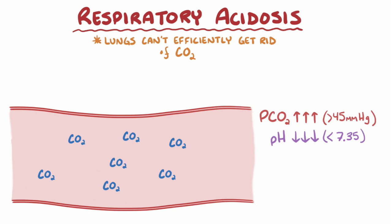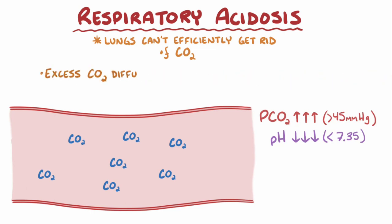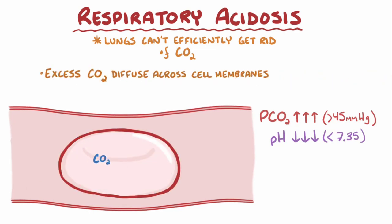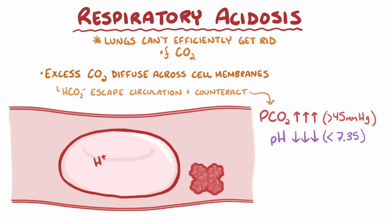To compensate for this decrease, the body has several mechanisms. If the respiratory centers are working, they try to increase the rate and depth of ventilation. If that doesn't work, some of the excess carbon dioxide diffuses across cell membranes — especially into red blood cells — where it reacts with water molecules and forms carbonic acid, which eventually gets converted into hydrogen ions and bicarbonate ions. The bicarbonate can quickly escape to the circulation, trying to counteract the increased pCO2 and keep the pH from getting too low. At the same time, free hydrogen ions are generated but can be bound and neutralized by basic molecules within the cells, mainly exposed NH2 or amine groups in proteins like hemoglobin.